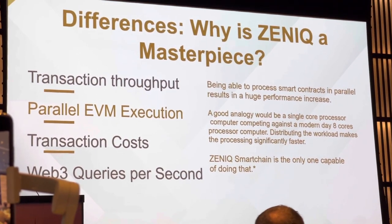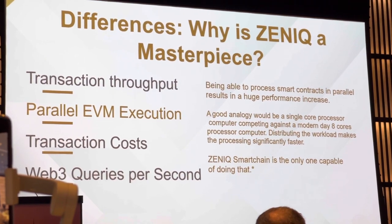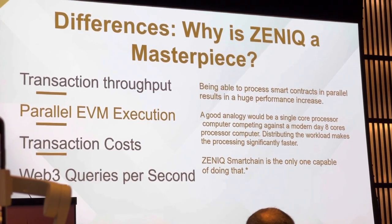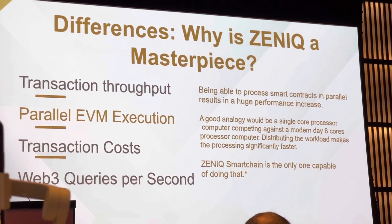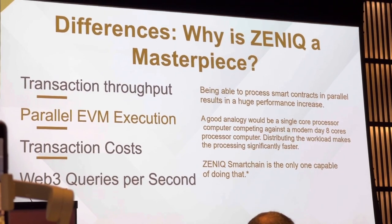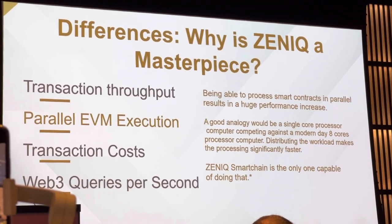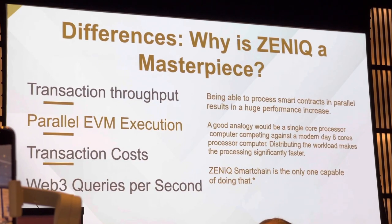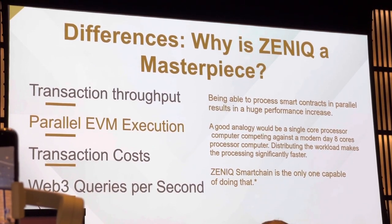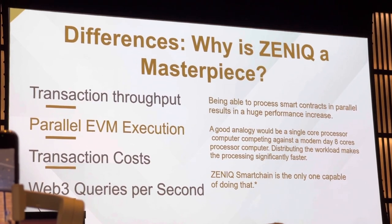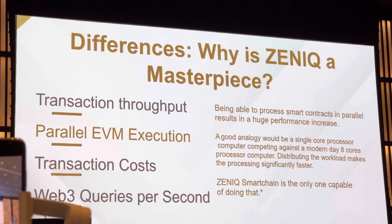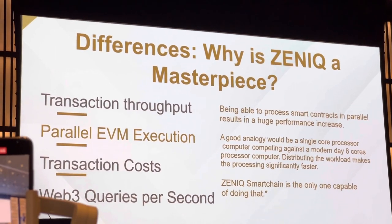This is possible because we have parallel EVM execution. EVM is basically what makes your smart contract work. When I say parallel — imagine you have a single-core computer, like we had 20 or 25 years ago. It's so slow. Of course, you need a four-core or eight-core computer. Just think: two people working together on one project is better than one — four is better because they can work together and achieve the application faster.